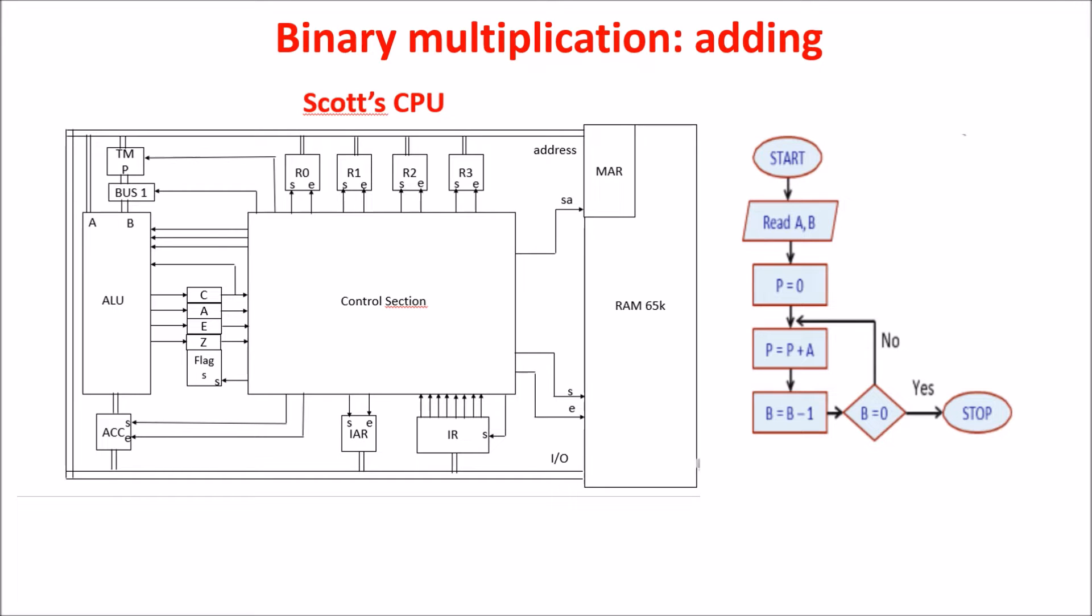Remembering that in the SCOT CPU an instruction takes six clock cycles, our program at least needs six times the multiplier clock cycle to give us the product. You can see this is a very inefficient way to perform multiplication.